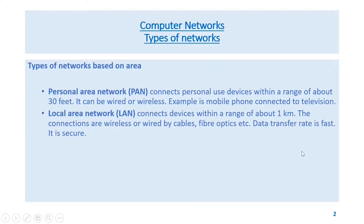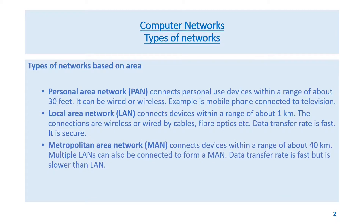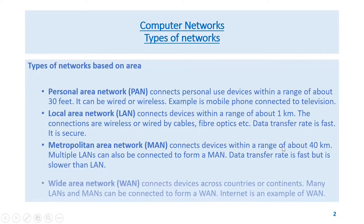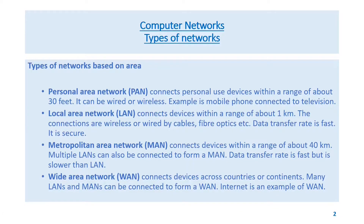LAN connections are wireless or wired by cables, fiber optics, etc. Data transfer rate is fast and it is secure. Metropolitan Area Network (MAN) connects devices within a range of about 40 kilometers. Multiple LANs can also be connected to form a MAN. Data transfer rate is fast but slower than LAN.